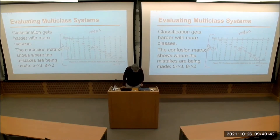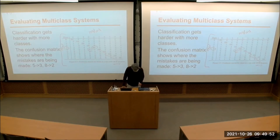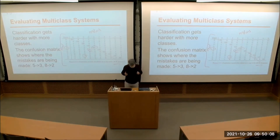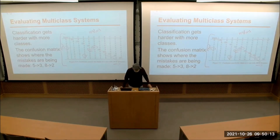What's important about the confusion matrix is it shows you where you're making your mistakes. Looking at the largest numbers not on the main diagonal: five and three were easily confused by the classifier; eight and two had a relatively large number, meaning they were relatively easily confused. Building one of these confusion matrices shows you where you're making mistakes — that's a useful thing to know.